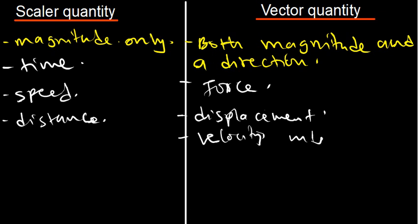Basically, we need to understand that a vector quantity is a physical quantity which has got both magnitude and direction. So when we talk of 20 newtons east, or maybe a car is moving with a speed of 20 meters per second south, that is a vector.